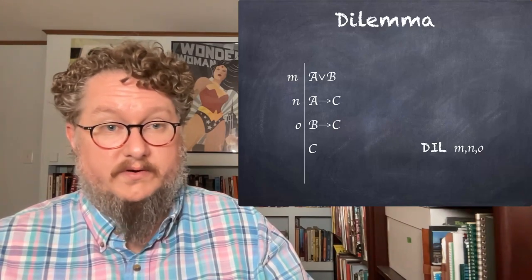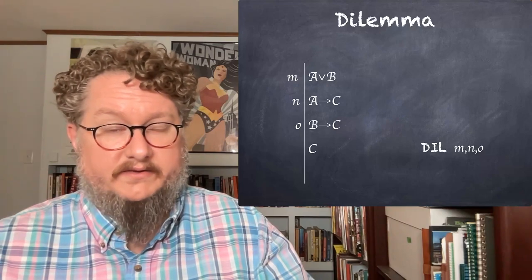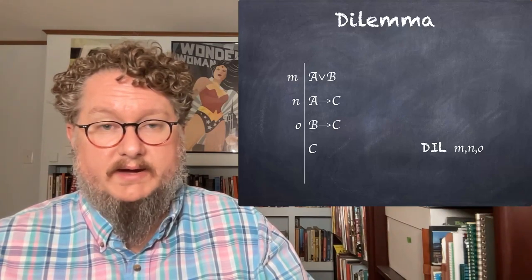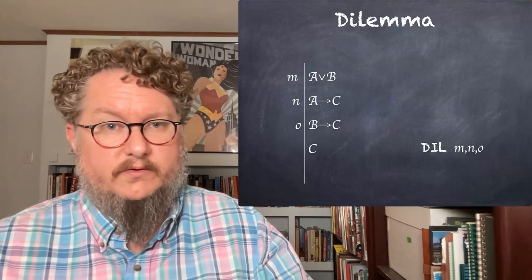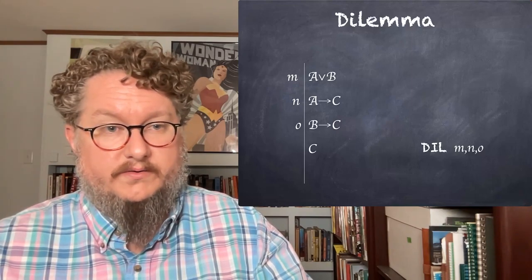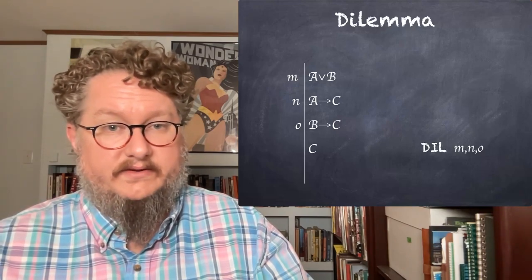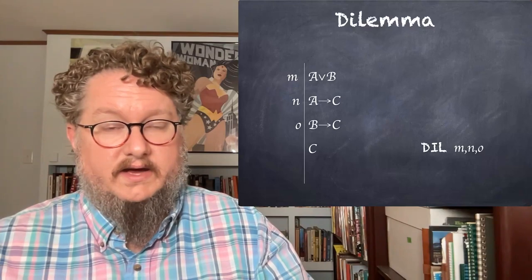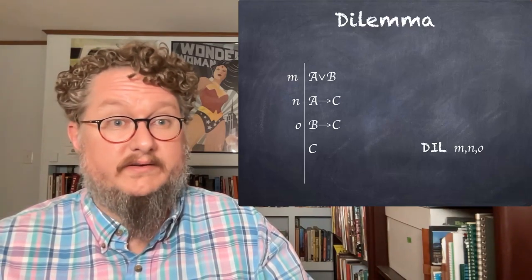A, B, and C here are our script letter meta variables, not just sentence letters. The intuitive idea here is that you don't know if A or B is true, but you know that one or the other or both are true and if you have these two conditionals from A to C or B to C, then either way C is going to end up being true. That's kind of the intuitive idea.